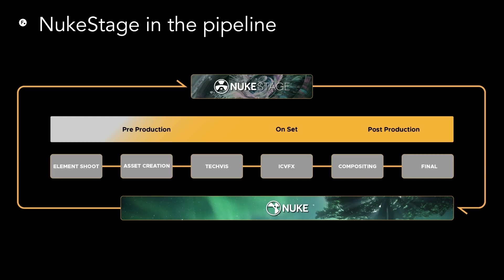In terms of pipeline and workflow, for 2D and 2.5D shows in particular, NukeStage can run from asset creation all the way through to final, picking up the tech viz and ICVFX portions onset where we work in real time and collaboratively with the onset team. Having Nuke as the backbone for the production allows us to understand the asset lifecycle, but also color transforms as they have happened throughout the production, ensuring that content on screen and in post-production has been correctly manipulated throughout the pipeline.